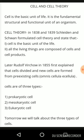Later, Rudolf Virchow in 1855 first explained that cells divide and new cells are formed from pre-existing cells. This phenomenon is called Omnis cellula e cellula.